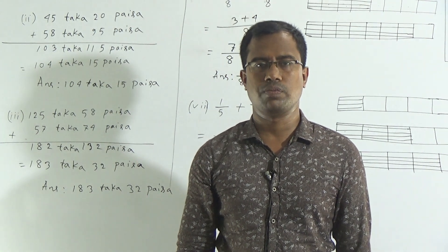That means 132 poisha. Now we will add the taka part: 5 plus 7 is equal to 12, from 12 we write 2 and carry 1. 1 plus 2 is equal to 3, and 3 plus 5 is equal to 8. Then 1 plus 5 is equal to 8, so with the carry it will be 182 taka.